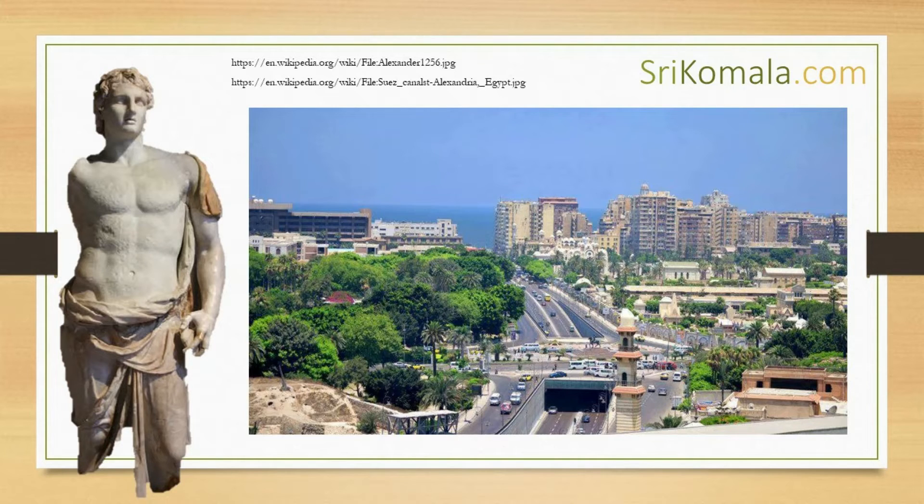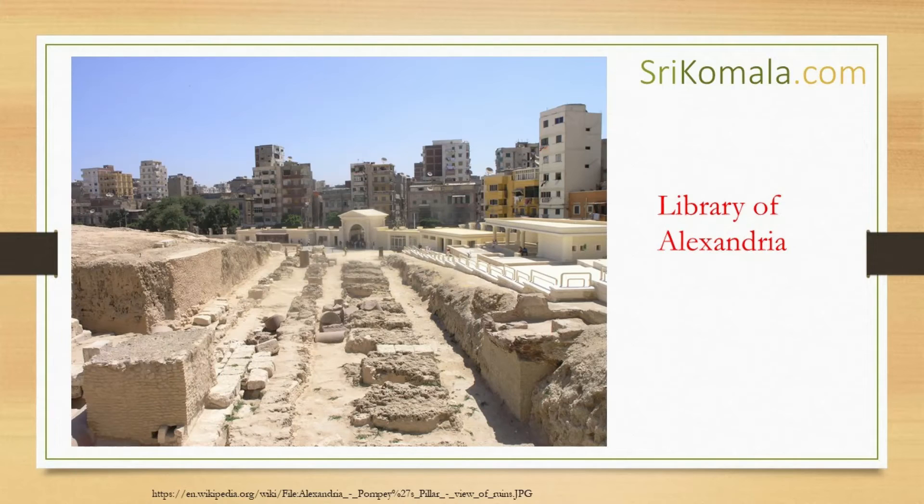Thus, Euclid is also known as Euclid of Alexandria. Euclid moved to the city of Alexandria in Egypt 10 years after Alexander the Great, the king of Macedonia, founded the city. It is believed that Euclid used to work at the Great Library of Alexandria.